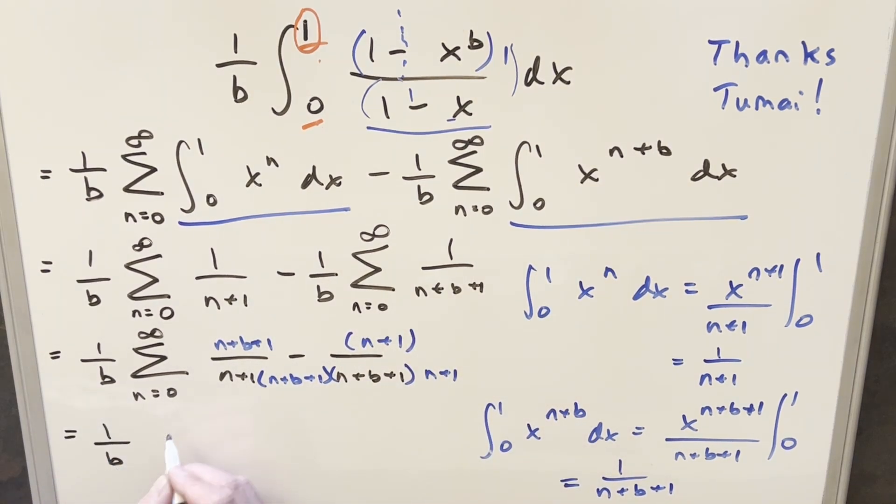So then when we put these together with the common denominator, notice the n's are going to cancel, the 1's are going to cancel, and now we're just left with b, common denominator, which is n plus 1 times n plus b plus 1.